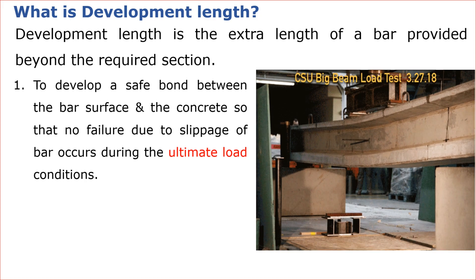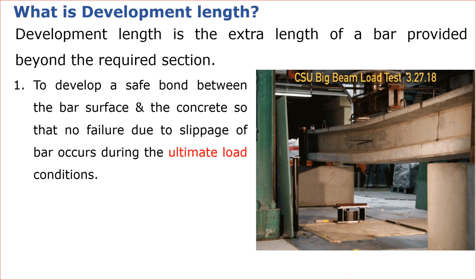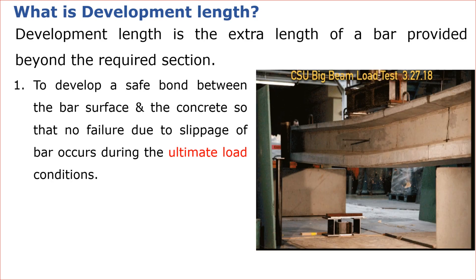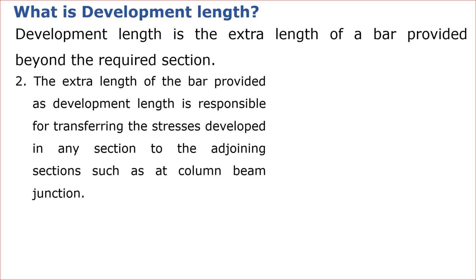Ultimate load condition: as you can see in the picture, ultimate load is the amount of load applied to the component beyond which the component will fail. Now in this diagram you can see that the bar from the beam is not provided till the end of the column, hence the stresses will not be transferred properly to the adjoining sections, making it prone to failure.